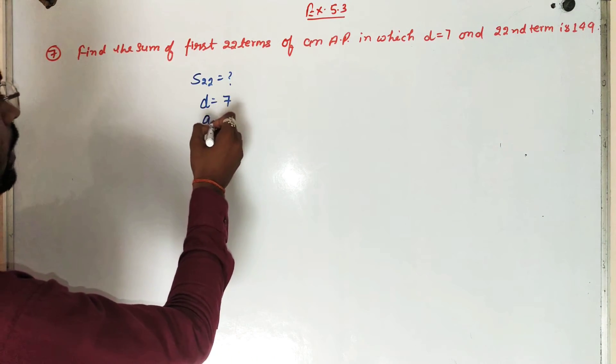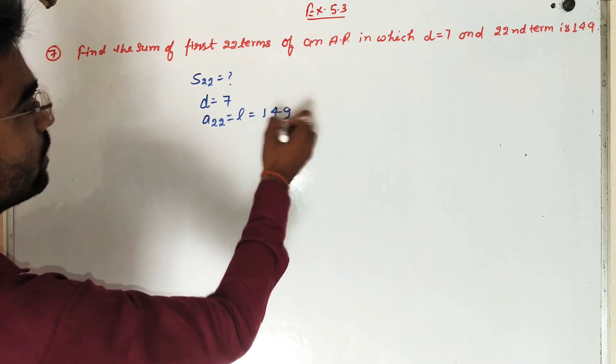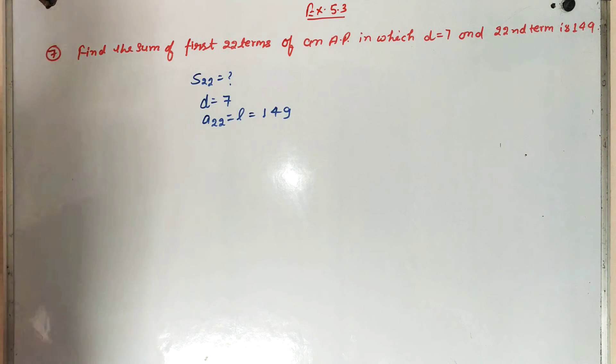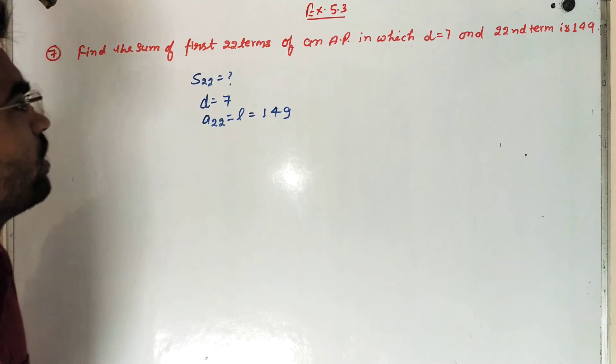And 22nd term, that means A22, is equal to 149. Students, to find the sum of 22 terms, we need the first term.